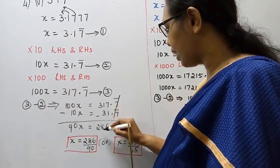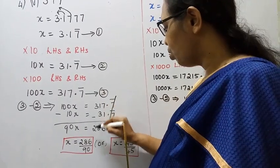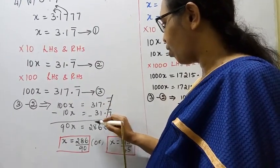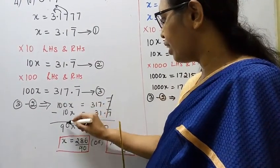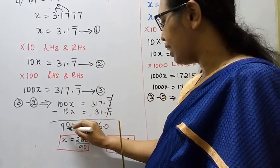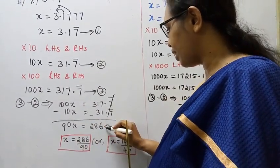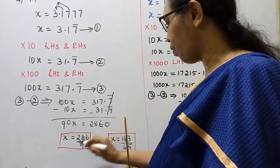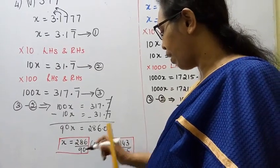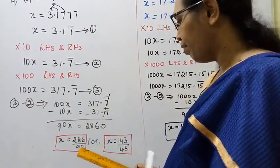11 minus 3 equals 8. 7 minus 1 equals 6. So 286.0. 90x equals 286. x equals 286 by 90.